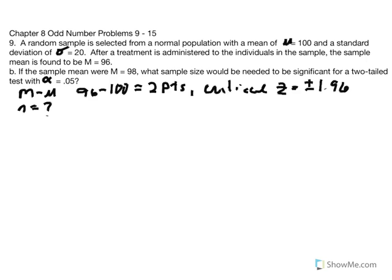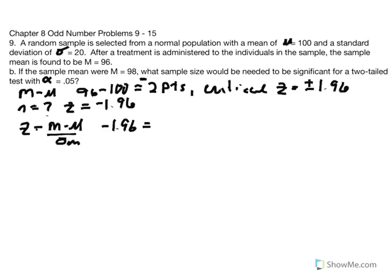Because the mean difference is negative two, the critical z value we focus on is the negative version: negative 1.96, just as we did in the last example. If we were talking about a positive mean difference, we would use the positive critical z value of 1.96. So, using z equals m minus mu divided by standard error, at minimum we want a z value equal to negative 1.96 at the critical region.